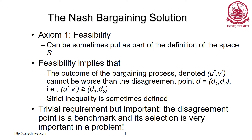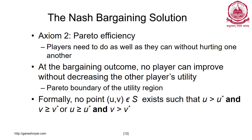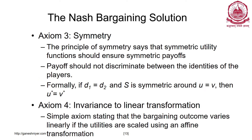Feasibility implies that the outcome (U*, V*) cannot be worse than the disagreement point — it has to be feasible, which is a very natural condition, and the disagreement point is the benchmark. Pareto efficiency means players need to do as well as they can without hurting one another: no player can improve without decreasing the other's utility. You will not be able to find a (U, V) such that U > U* and V ≥ V*. Symmetry states that if two players have the same disagreement point, their outcome should also be the same: if D1 = D2 and S is symmetric around U = V, then U* = V*.